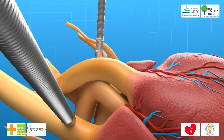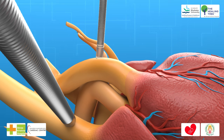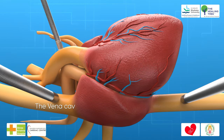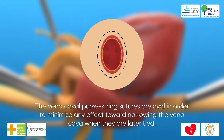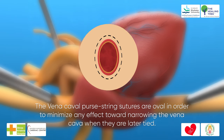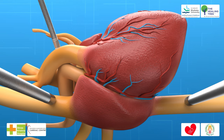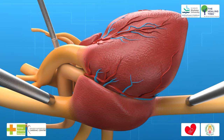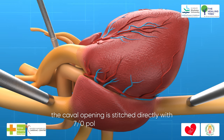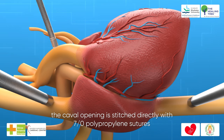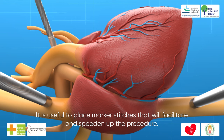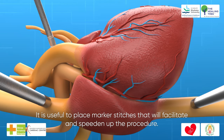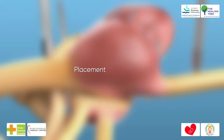Step 6: Purse-string sutures are placed in the ascending aorta for aortic cannulation and directly upon each vena cava for venous cannulation. Step 7: The vena cava purse-string sutures are oval in order to minimize any narrowing effect when later tied. Step 8: If the SVC is particularly small, the suture is used only to secure the cannula and the caval opening is later stitched directly with 7-0 polypropylene sutures. Marker stitches are placed to facilitate and speed up the procedure.